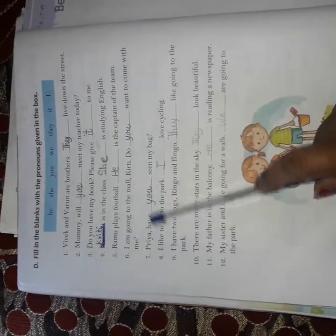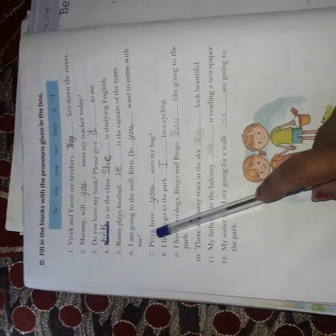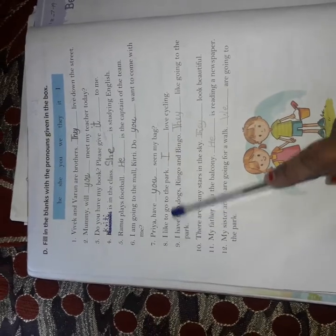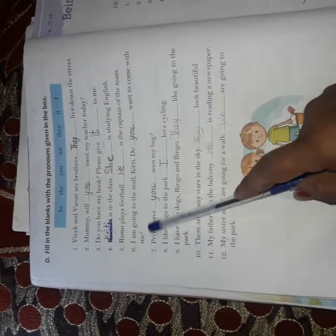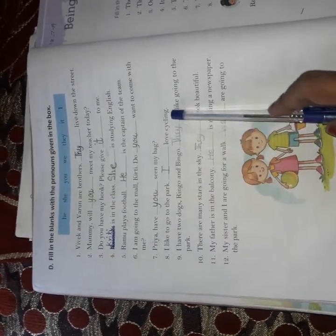Seventh, Priya, have dash seen my bag? Now, I am talking to Priya. Have you seen my bag? Eighth, I like to go to the park. Dash loves cycling. Now, I am talking of myself. I like to go to park. So, I love cycling.